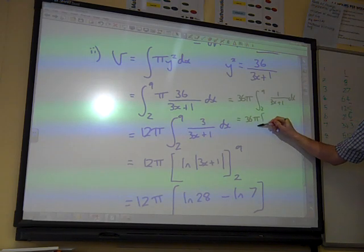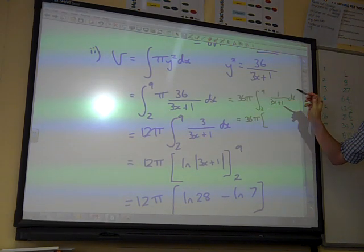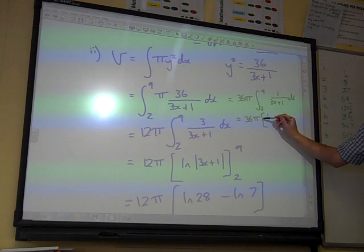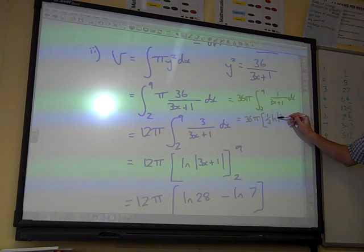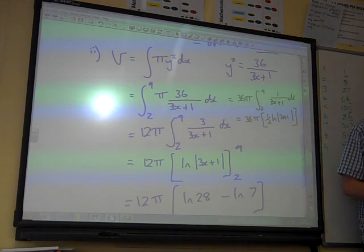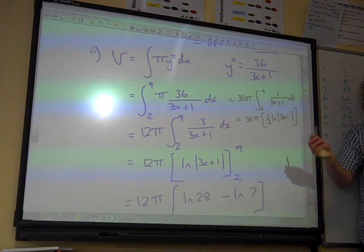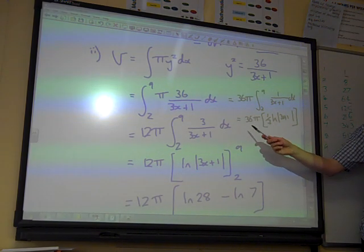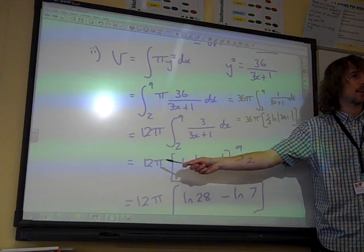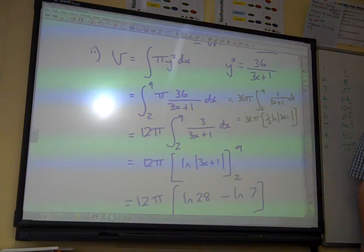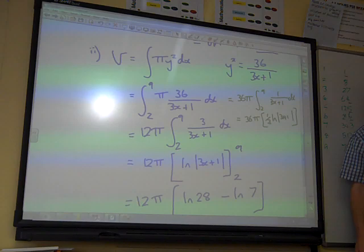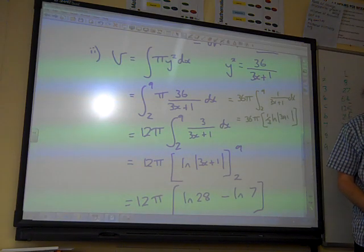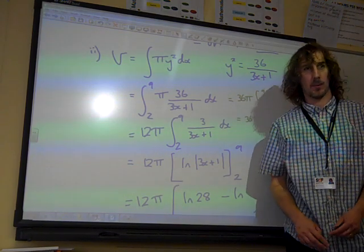then your standard integral says that if you integrate that, we've got 36 pi times, that would be a third, wouldn't it, of the natural log of 3x plus 1. Okay, are you happy with that? Now a third times 36 is the 12 that I have then. So I just didn't say a different word. Are you happy George? George, you know, they are brilliant, happy George, he said, George, he wasn't happy. Stop the video.